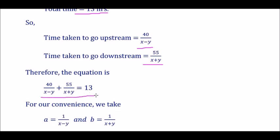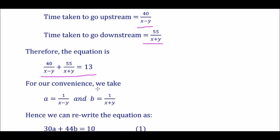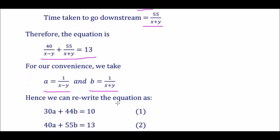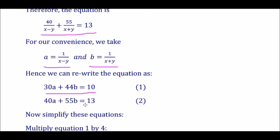For convenience, let A = 1/(X − Y) and B = 1/(X + Y). We can rewrite the equations as: 30A + 44B = 10, marked as Equation 1, and 40A + 55B = 13, marked as Equation 2.